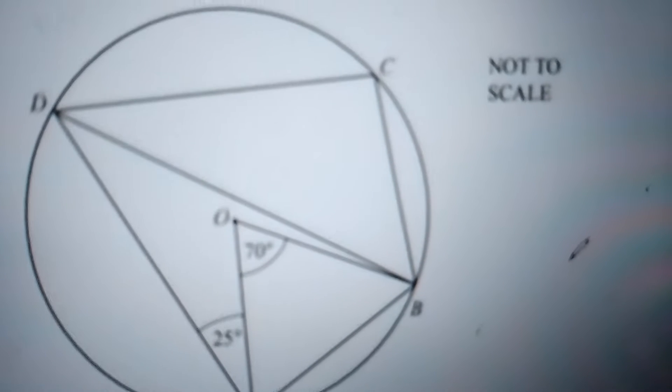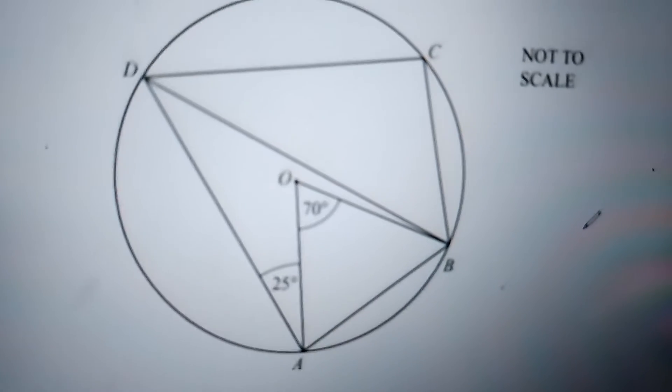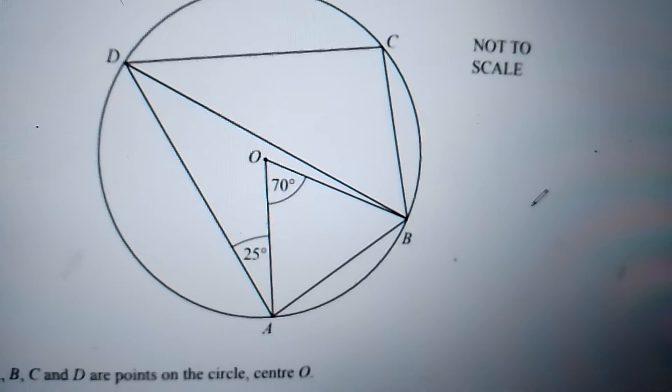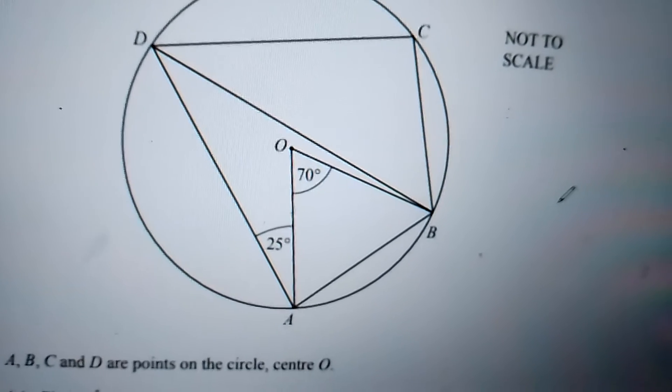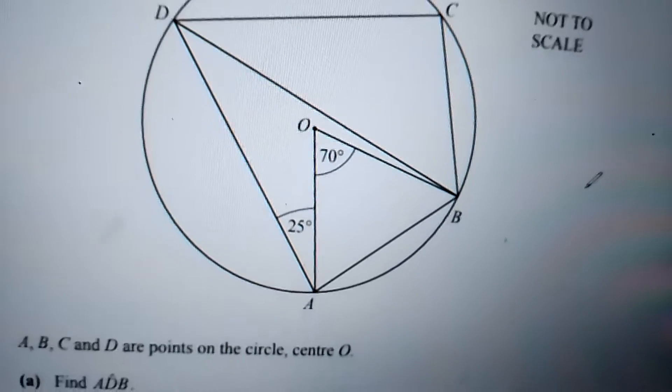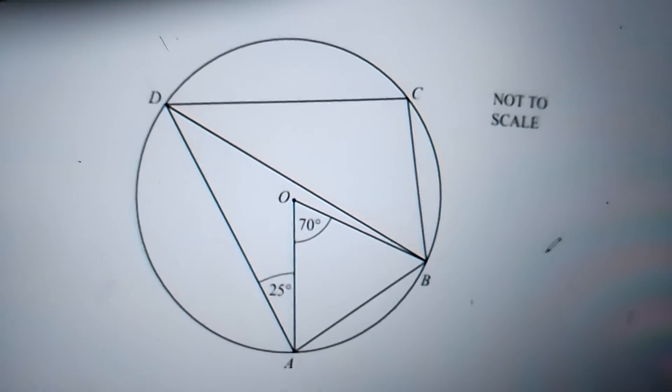This one, BCD. And you see that ABCD, all these points are on the outline of the circle. It is a cyclic quadrilateral. What is the property? The opposite angles in a cyclic quadrilateral is equal to 180.